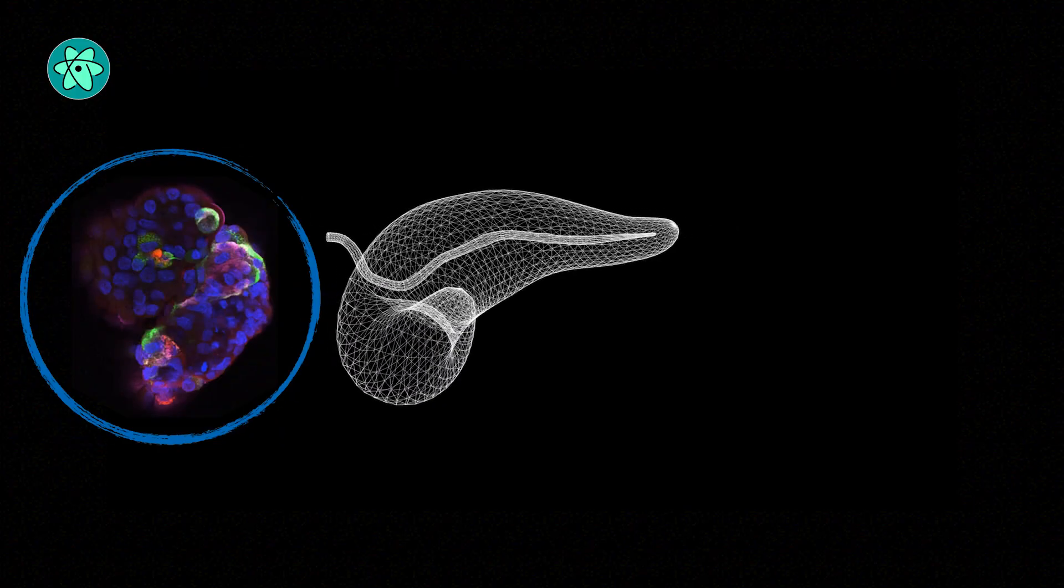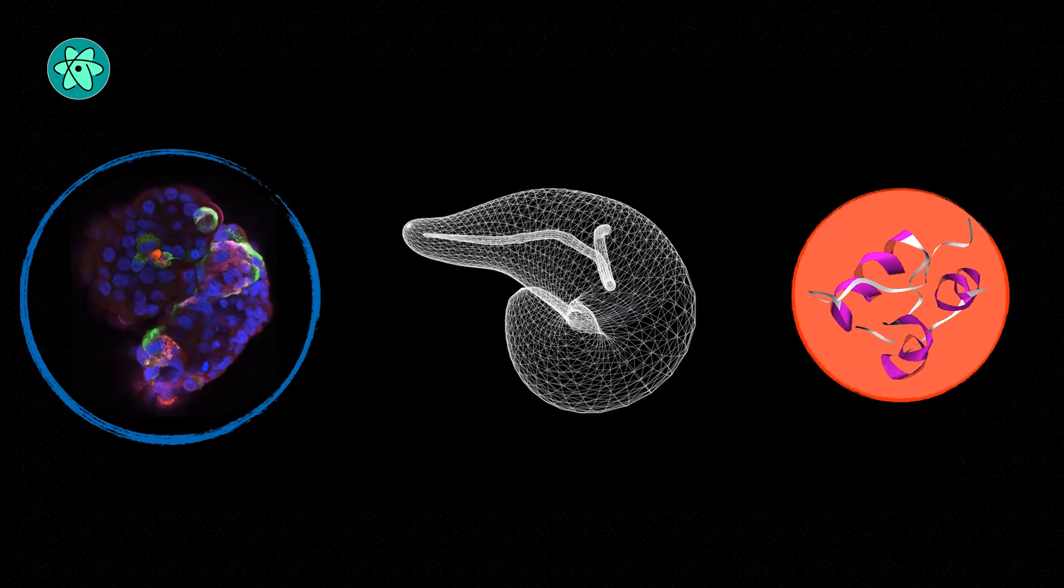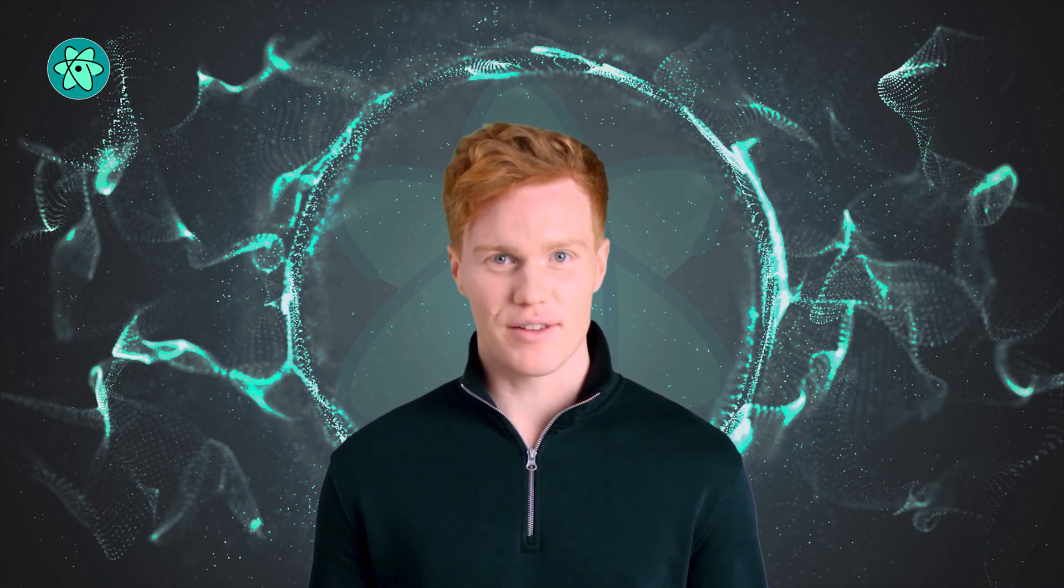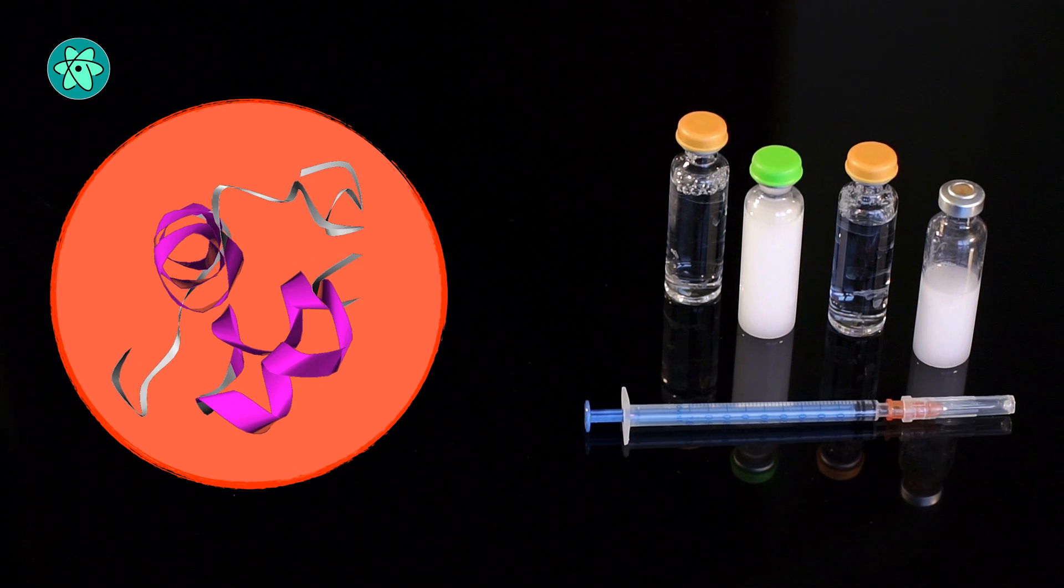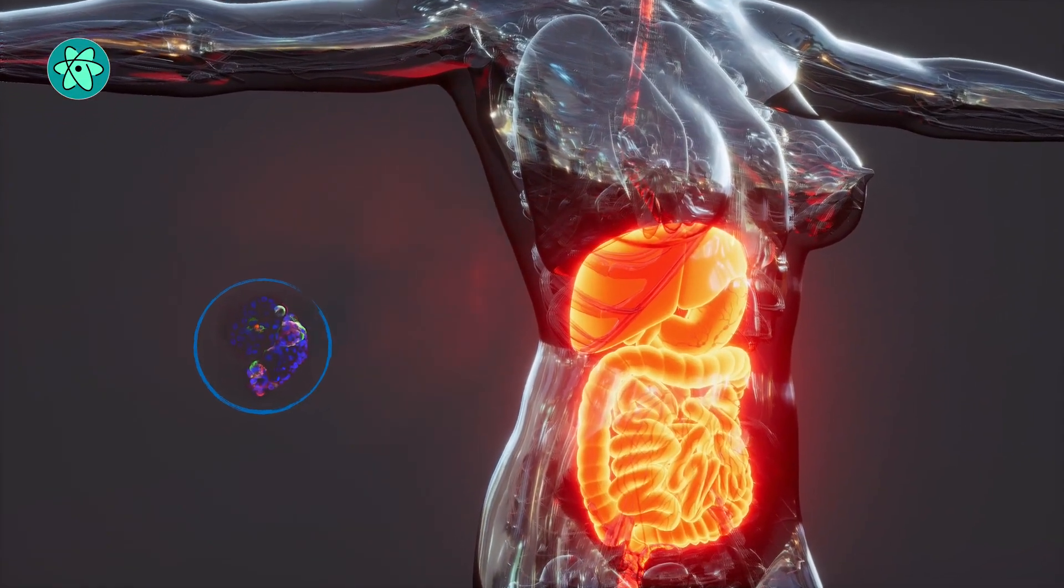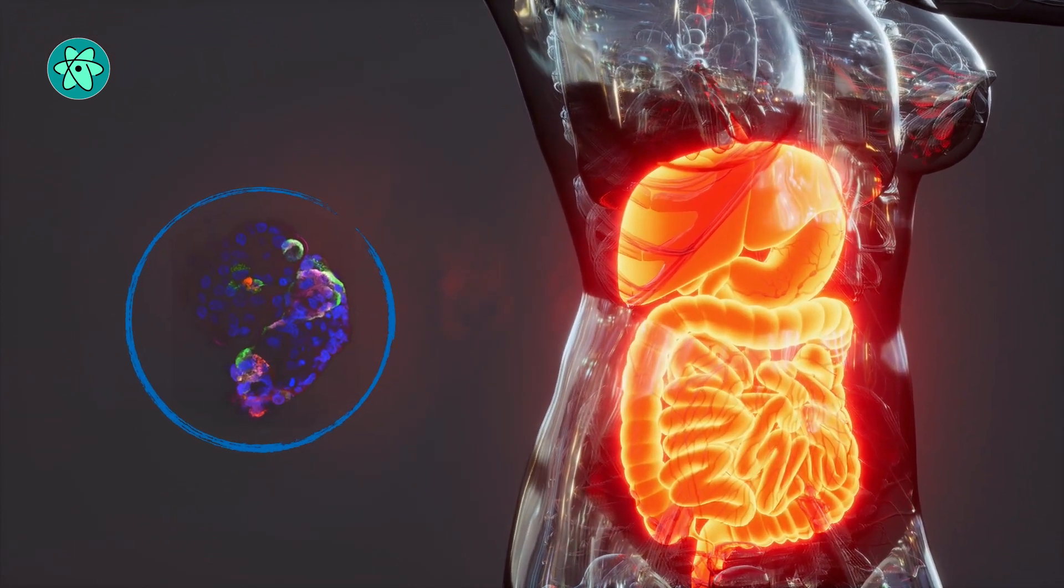In type 1 diabetes, the beta cells in the pancreas that usually produce insulin can't make enough to meet demand, often because the immune system has destroyed those cells. Treatment currently relies on administering insulin shots, but an emerging branch of study centers on finding ways to replenish the insulin production of those beta cells.